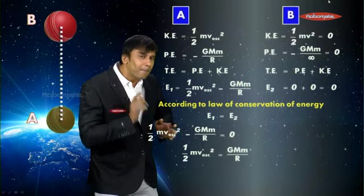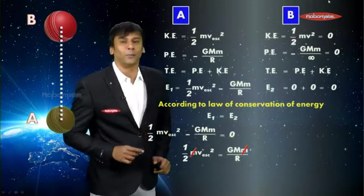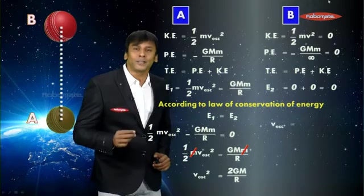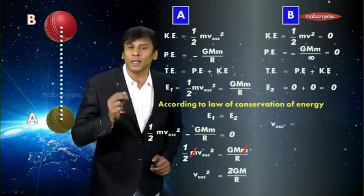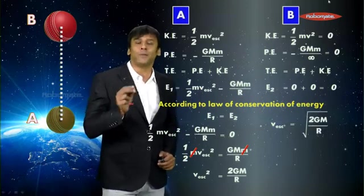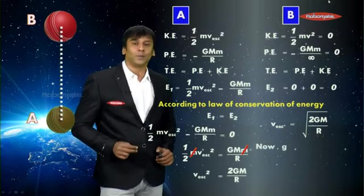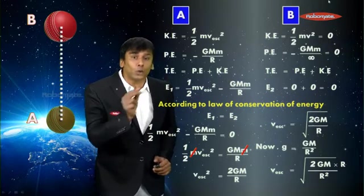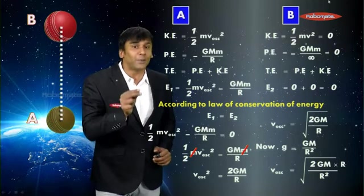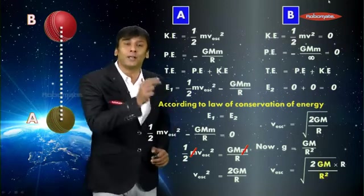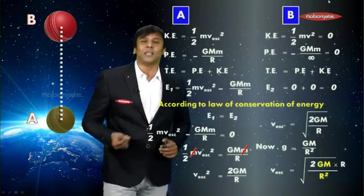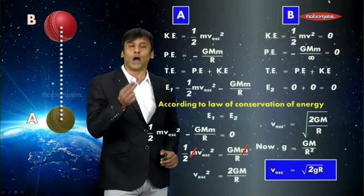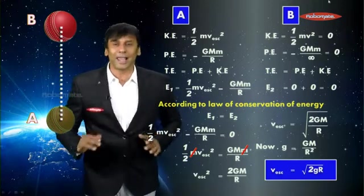Looking at the equation, small m is common on both sides, so we cancel it. What we get is v² = 2GM/R, and from this we get the equation for escape velocity: v_escape = √(2GM/R). We also know that small g = GM/R², so substituting, escape velocity = √(2gR²/R) = √(2gR). So here we have it — the equation for escape velocity is √(2gR).